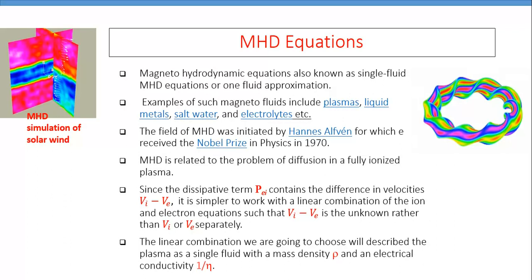Here is the MHD simulation of the solar wind, which is coming from the sun's surface. And here you can see a torus magnetic confinement machine where theoreticians working with fusion devices follow this MHD set of equations.